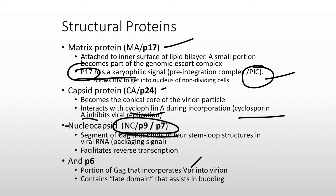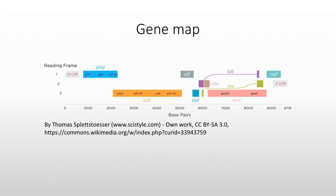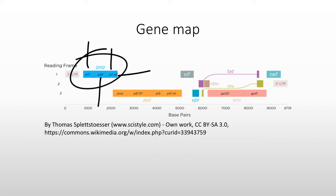The nucleocapsid — think nucleus, which has DNA — is important for converting RNA into DNA. The P6 segment is important because it pulls in another accessory protein called VPR. So to summarize: P17 is the matrix, P24 is the capsid, P7 is the nucleocapsid, and P6 attaches to VPR.